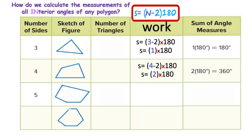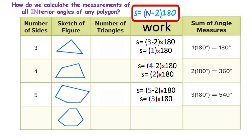If I look at a pentagon with 5 sides, I plug 5 into the formula. The sum of the interior angles of any pentagon is (5 minus 2) times 180. Five minus 2 is 3, multiplied by 180, which tells me that the interior angles of any pentagon have to be equal to 540 degrees.